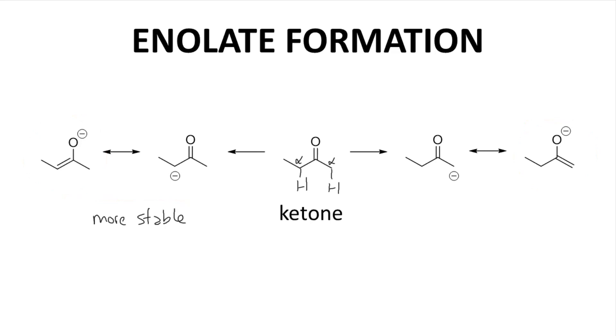For weaker bases like sodium hydroxide and alkoxides, the left more stable enolate is favored. With strong hindered bases like LDA, the less substituted alpha proton is more available to react and the right enolate tends to form. So in this case, the regiochemistry of enolate formation can be controlled through careful selection of the base.